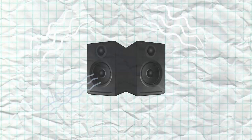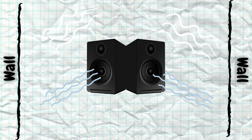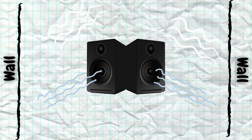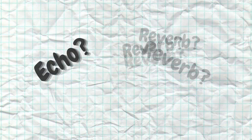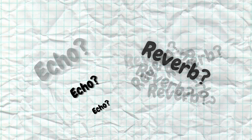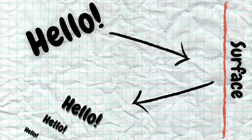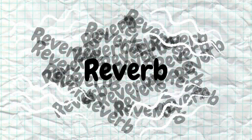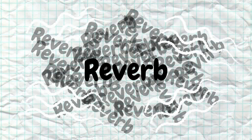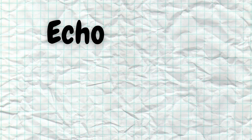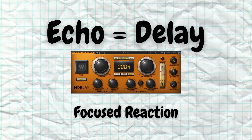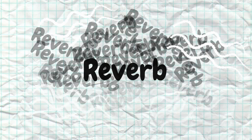What is a reverb? A reverb is basically sounds reflecting back from the walls. Isn't that an echo someone might ask? Well, an echo is more of a clear repeat of a sound, while reverb is more like many small echoes reflecting and reacting to the room the sound is in. Room in this case refers to any space. You could say an echo — created by the effect called delay — is a focused reaction, while reverb is an unfocused reaction.